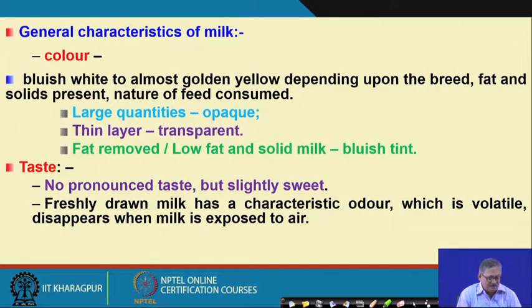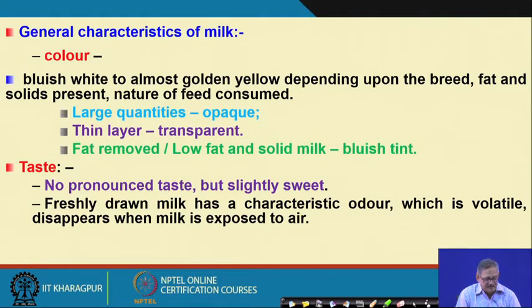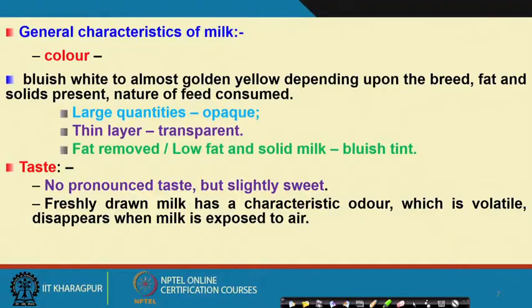Then we come to taste — there is no pronounced taste, but it is slightly sweet. Freshly drawn milk has a characteristic odor which is volatile and disappears when milk is exposed to air. Milk has a characteristic odor, and we had also discussed the distinction between odor and flavor previously.